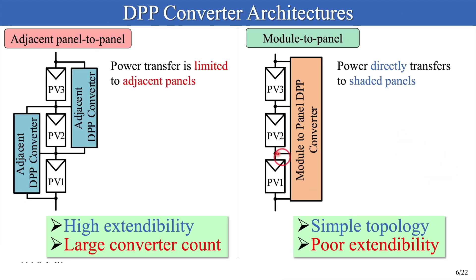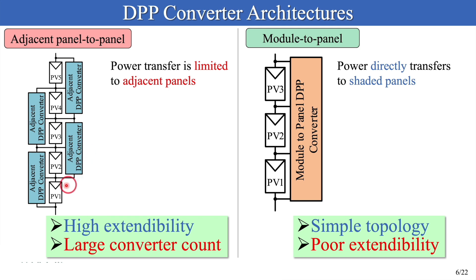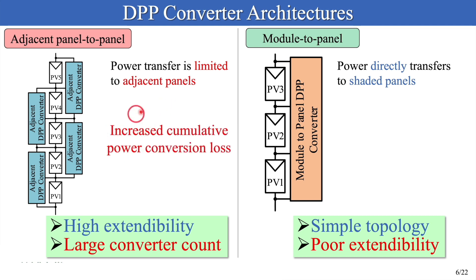There are some DPP converter architectures such as adjacent panel-to-panel and module-to-panel. The proper architecture should be selected depending on the application. The adjacent panel-to-panel DPP converter is equipped between panels. This architecture can automatically unify panel characteristics and flexibly be applied to any number of panels, achieving high extendability. However, since power transfer is limited to adjacent panels, power from unshaded panels has to traverse multiple converters before reaching the shaded panel, so cumulative power conversion loss is prone to soar. In addition, the converter count is proportional to the number of panels, and circuit complexity and cost are concerns, especially in large-scale systems.